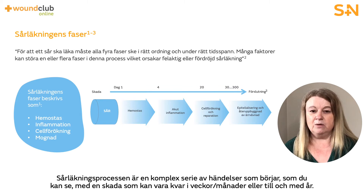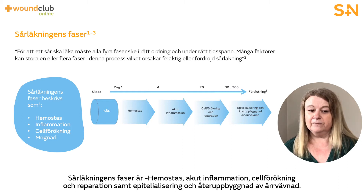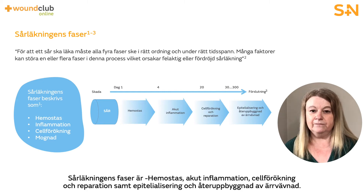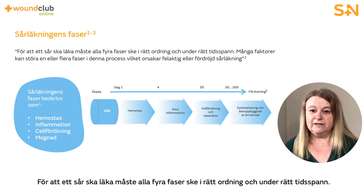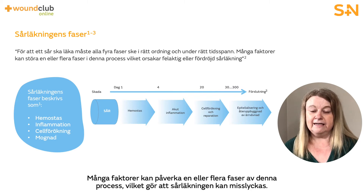The wound healing process is a complex series of events that starts with an injury and can continue for weeks, months or even years. The phases of wound healing are haemostasis, acute inflammation, cell proliferation and repair, and epithelialisation and remodelling of scar tissue. For a wound to heal successfully, all four phases must occur in the proper sequence and timeframe. Many factors can interfere with one or more phases of this process, meaning that the wound could fail to heal.